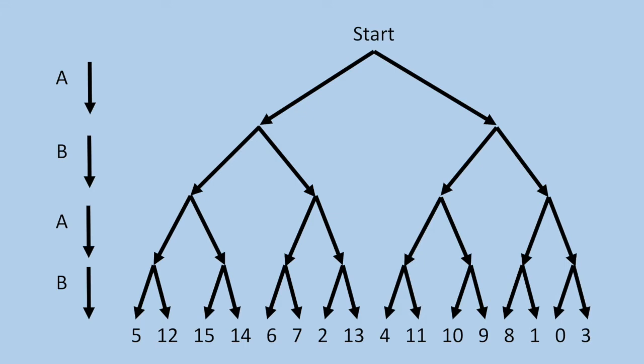So A starts, and they start at the top, and A gets to choose whether they're going to go down the left path or the right path, and then B chooses the next path, and then A goes again and B again. You can see the choices are labeled on the left-hand side there, and they will eventually land at one of those numbers at the bottom. Those are just the numbers 0 through 15 generated in a random order.